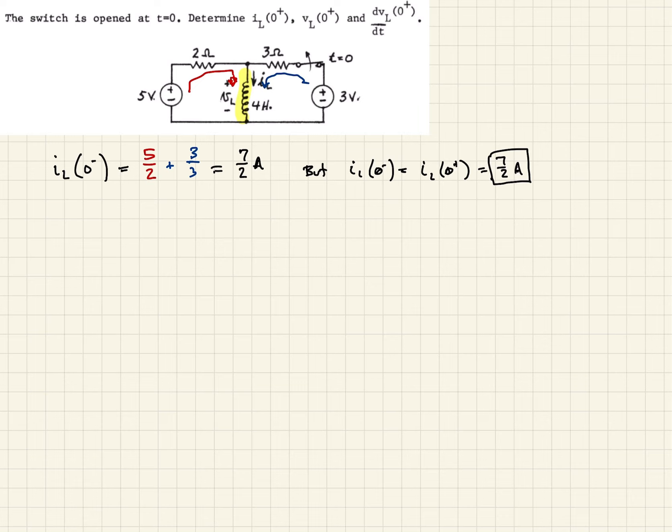Okay, so likewise, looking at our circuit, we can write an expression for our voltage across the inductor at 0 plus. And so that's going to be at 0 plus, this switch is open, right? So that's an open circuit. So we can show that like this. This circuit is open.